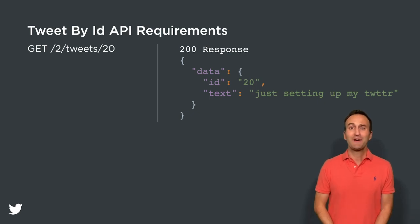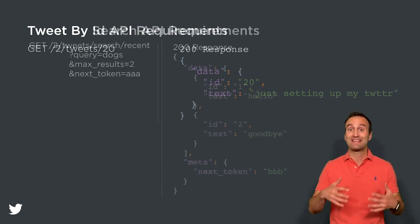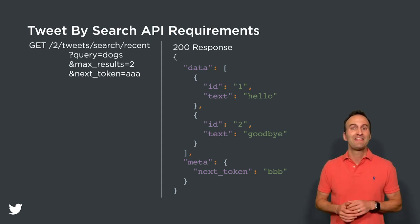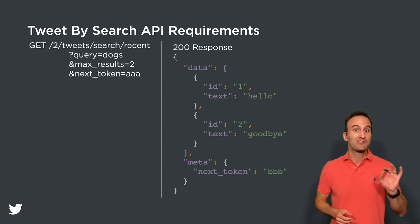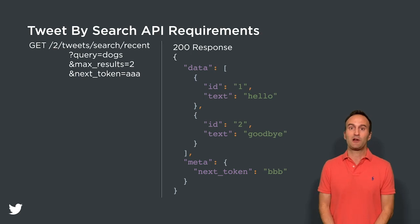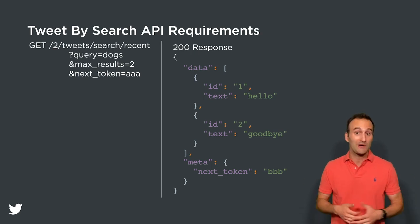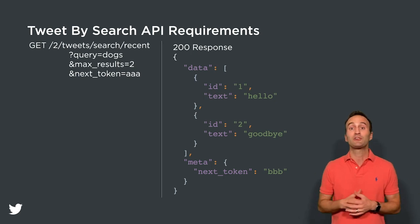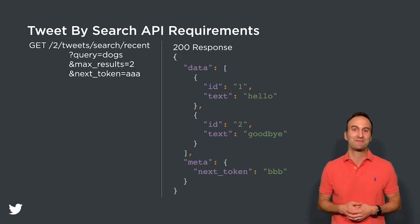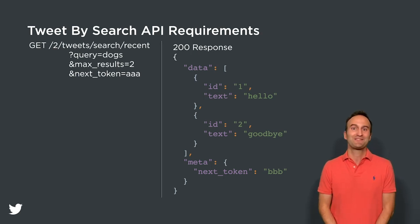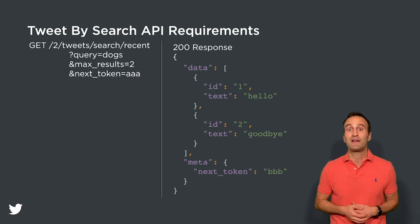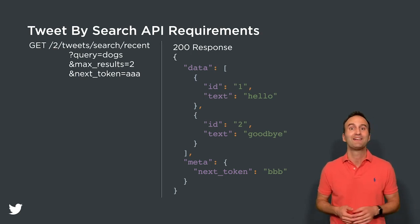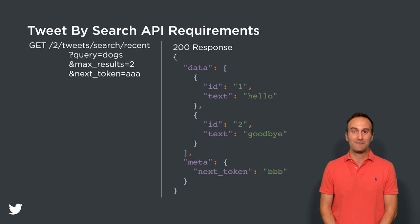We must also handle an HTTP GET request to /2/tweets/search/recent that accepts a query, max_results, and next_token query params. If the request is ill-formed, return a 400 Bad Request. Otherwise, return an HTTP 200 JSON response containing a list of tweets and the next token so that customers can paginate through the results, and return the same standard tweet format used everywhere else in the Twitter API.